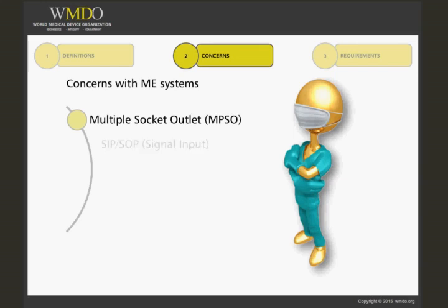The next concern is SIP-SOP connections — signal input part and signal output part — contributing towards leakage currents. This includes things such as Ethernet connectors, RS-232, and USB, which are typically data connections between different parts in the system. SIP-SOP connections can also contribute to the working voltages of isolation barriers in medical electrical equipment.